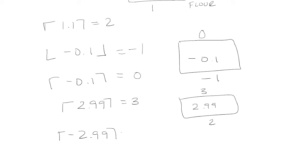Now that turns out to be the floor function. If we want to round negative 2.99 up, what's the next whole number that is greater than negative 2.99? That's going to be negative 2.